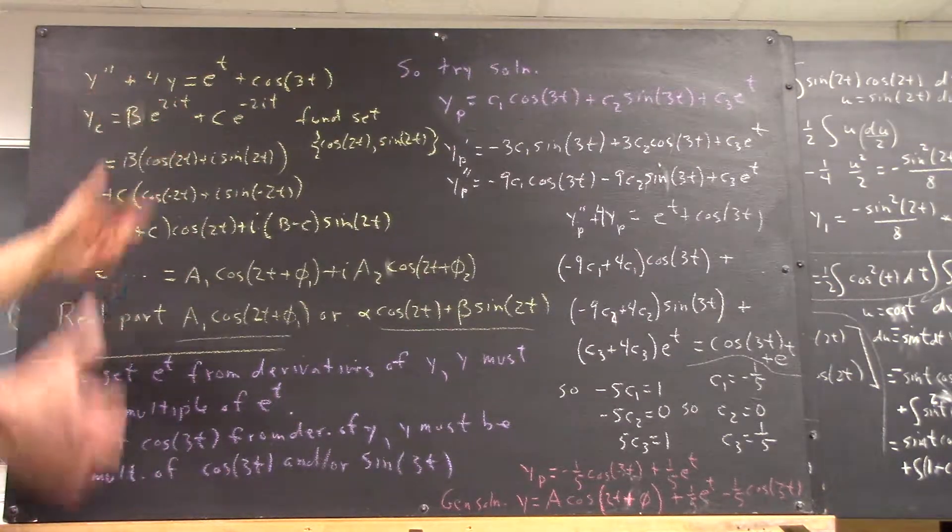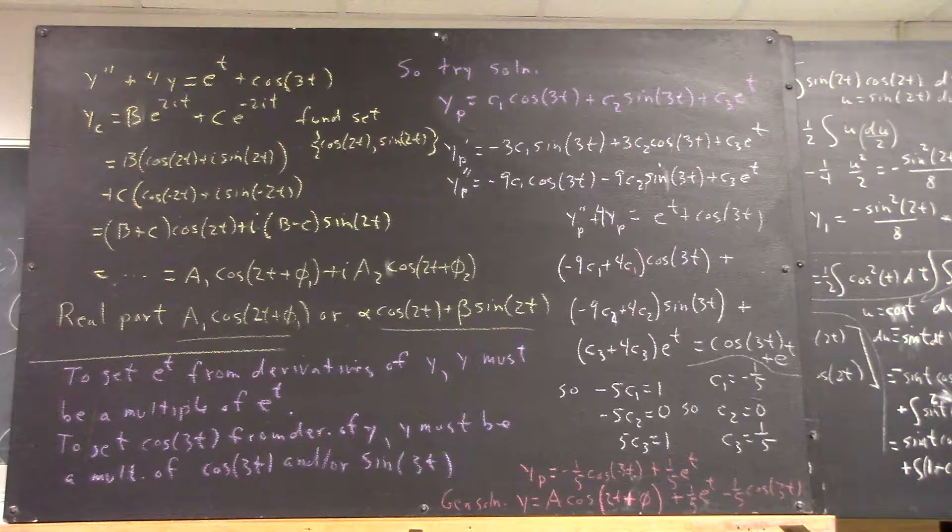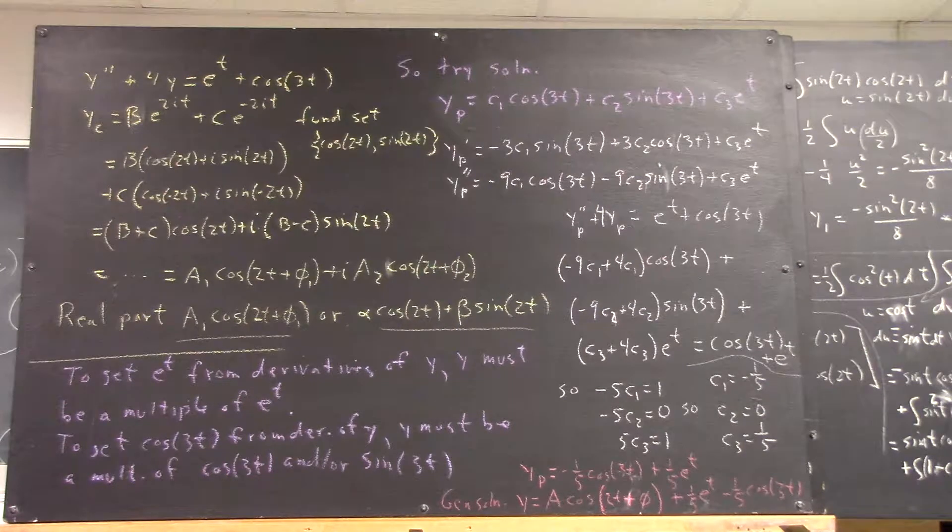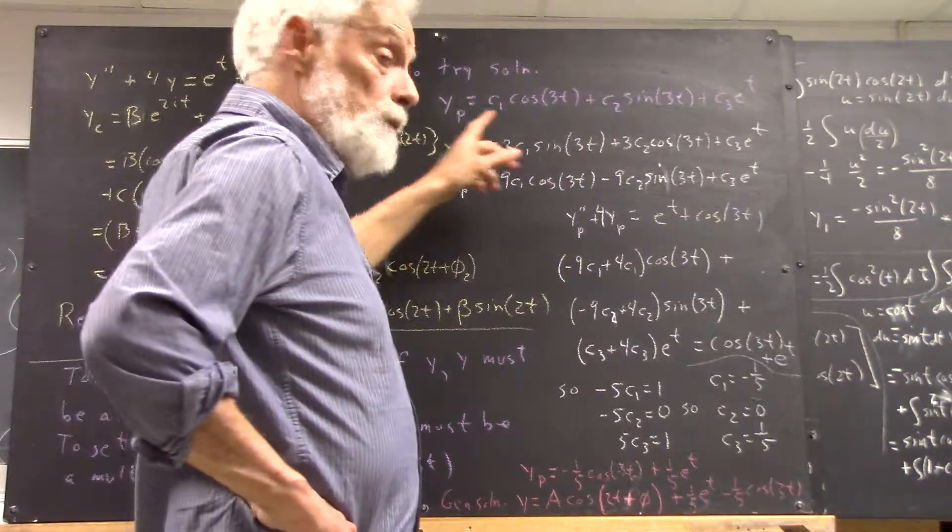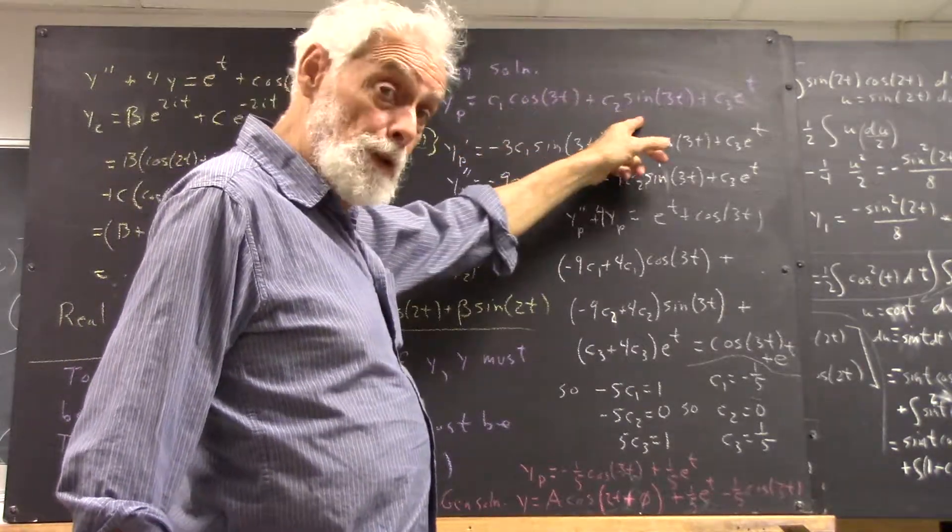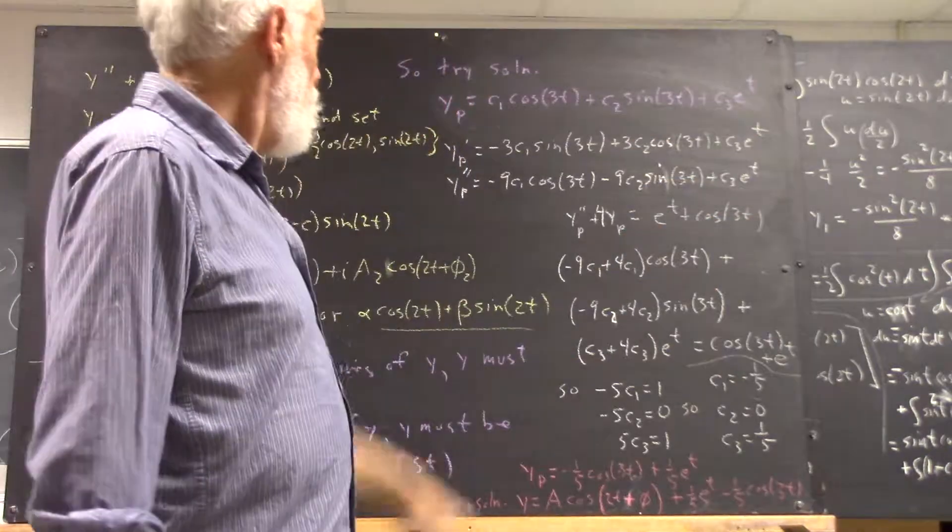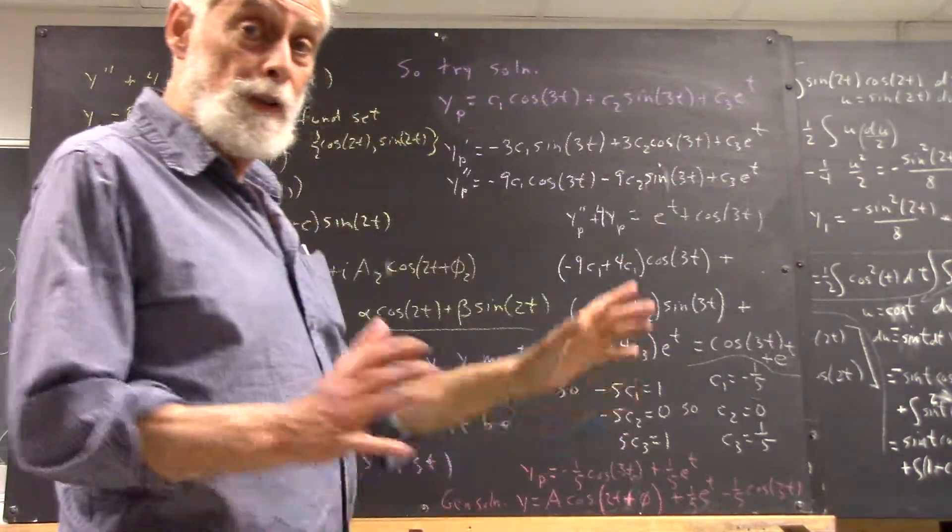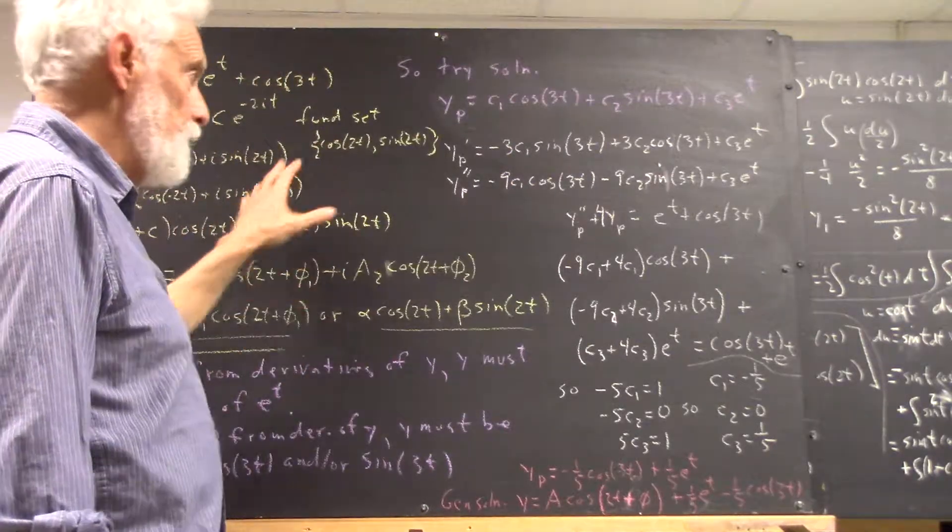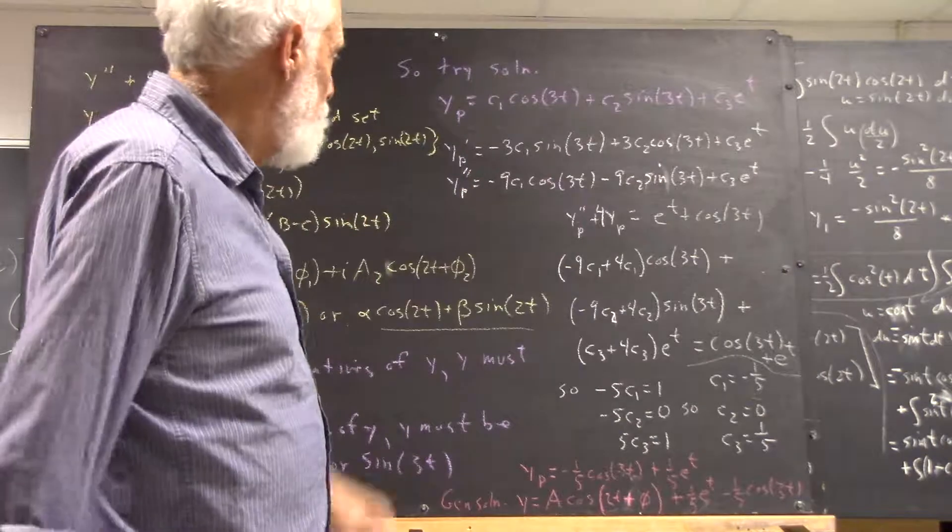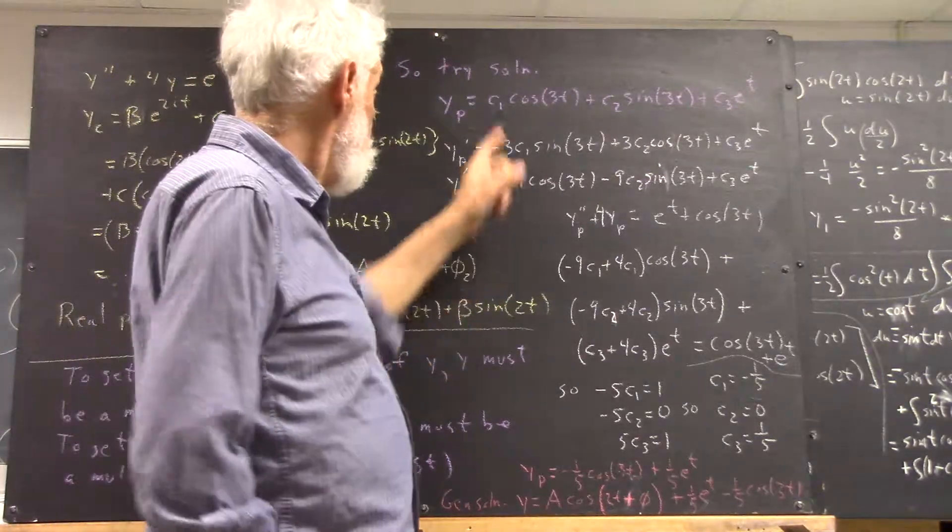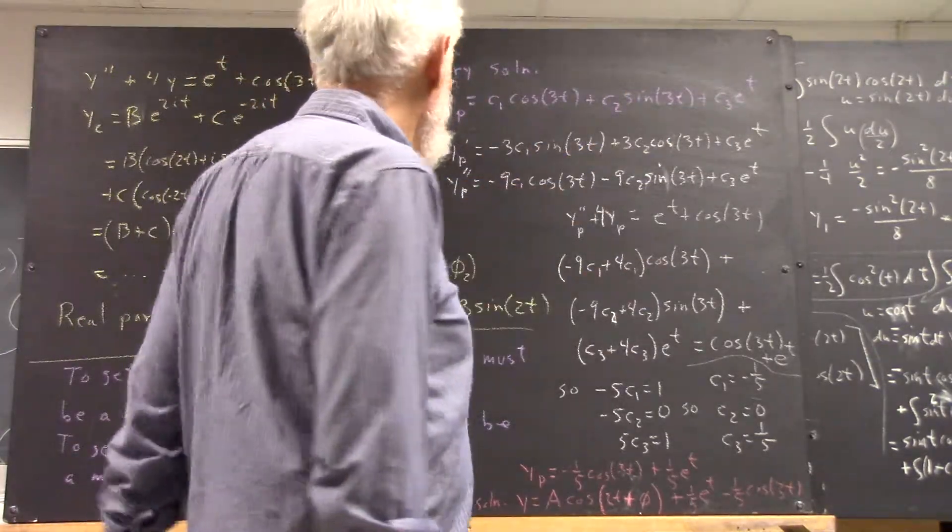We've talked about trial solutions for particular solutions; we've done this already, so this should be hopefully a useful review. Our trial solution is going to be yp equals c1 cosine of 3t plus c2 sine of 3t plus c3 e to the t. I use c1, c2, and c3 as lowercase c, as opposed to the uppercase C I used over here.